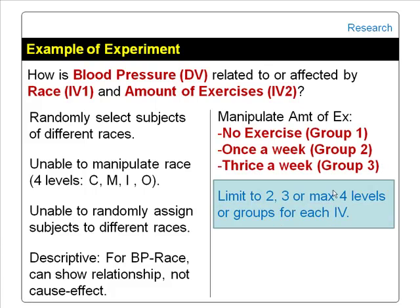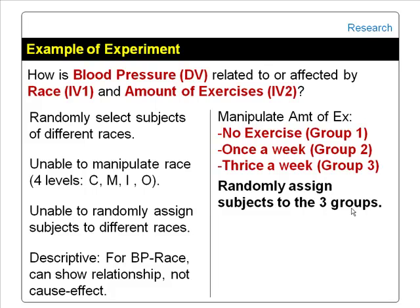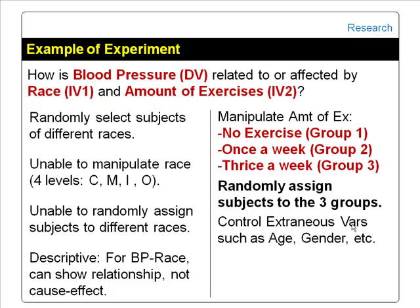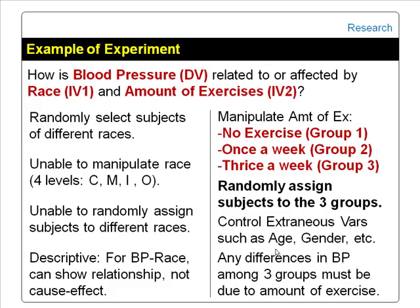We can manipulate the amount of exercise the subjects get. We can have a group with no exercise — this could serve as the control group — another group that exercises once a week, and a third group that exercises three times a week. It is recommended to limit the number of levels for each independent variable to two, three, or a maximum of four levels. We then randomly assign subjects to the three groups and control extraneous variables such as age and gender, ensuring the three groups have about the same number of male and female subjects and about the same mean age. If we observe differences in blood pressure among the three groups, those differences must be caused by the different amounts of exercise. In this case, we can show cause and effect: amount of exercise causes blood pressure to vary.